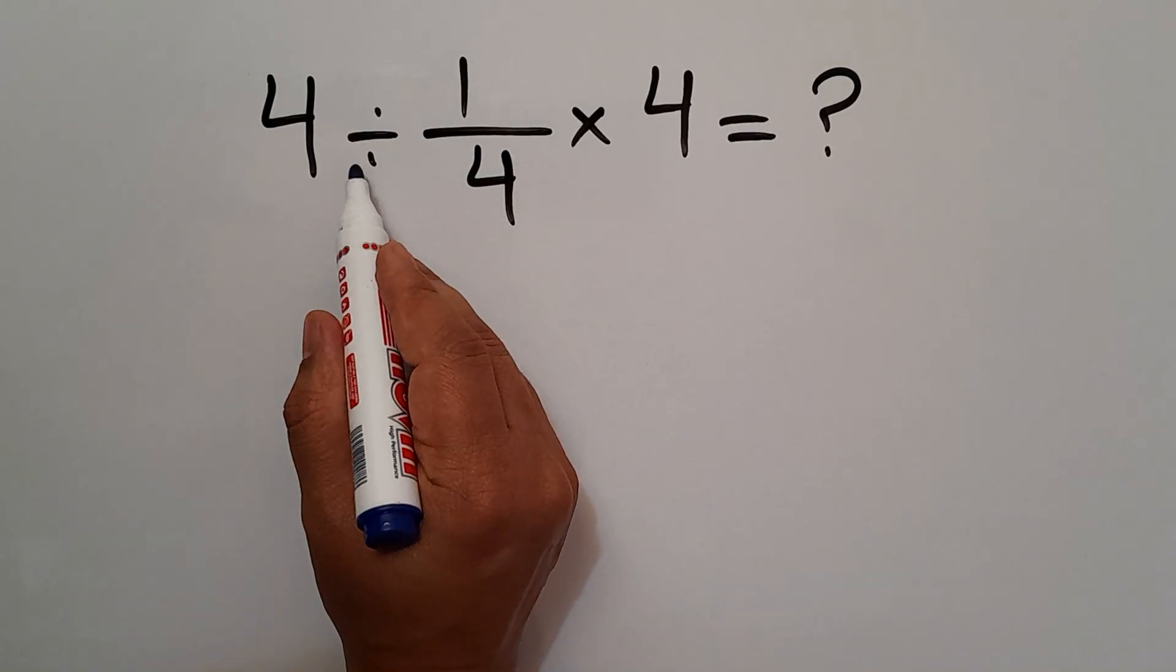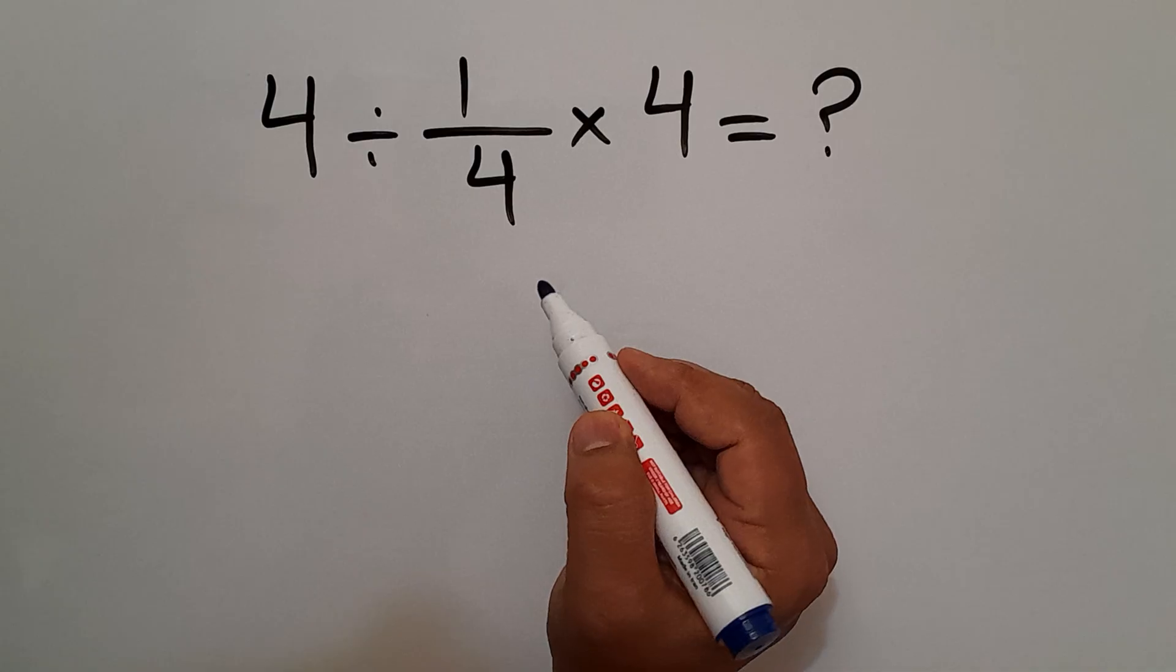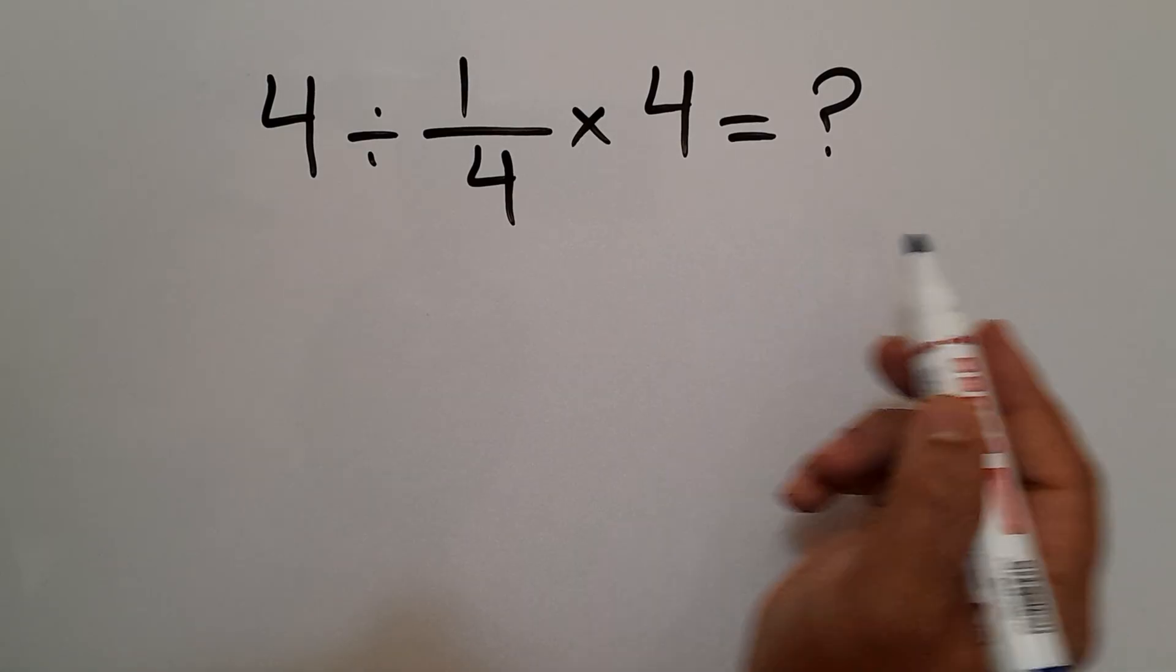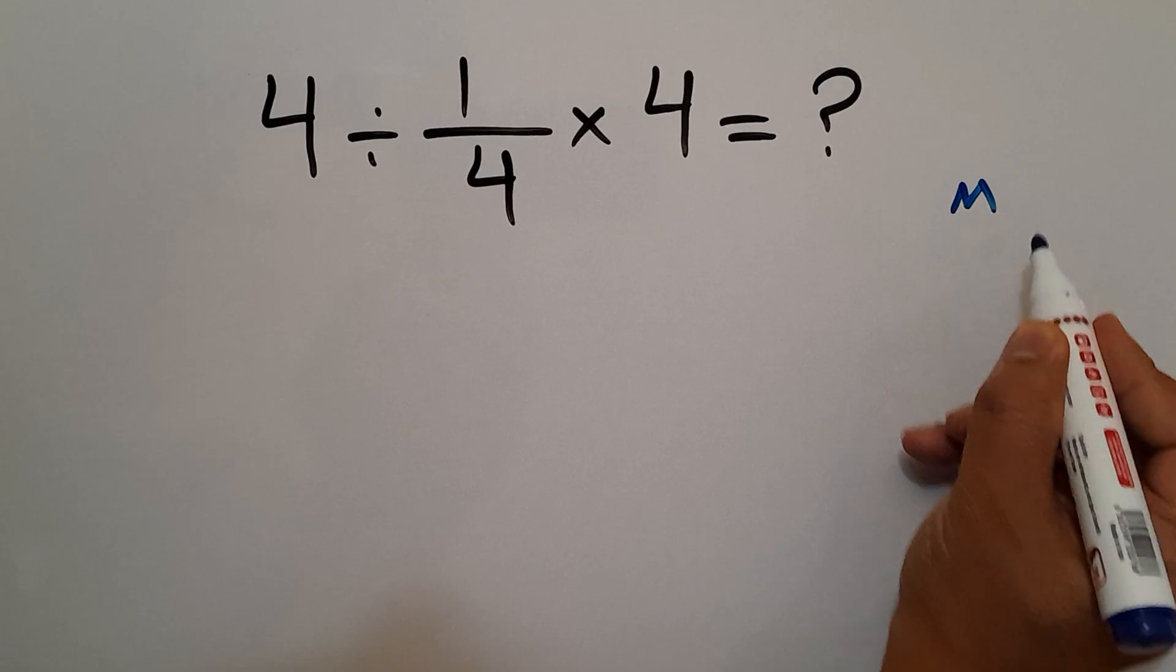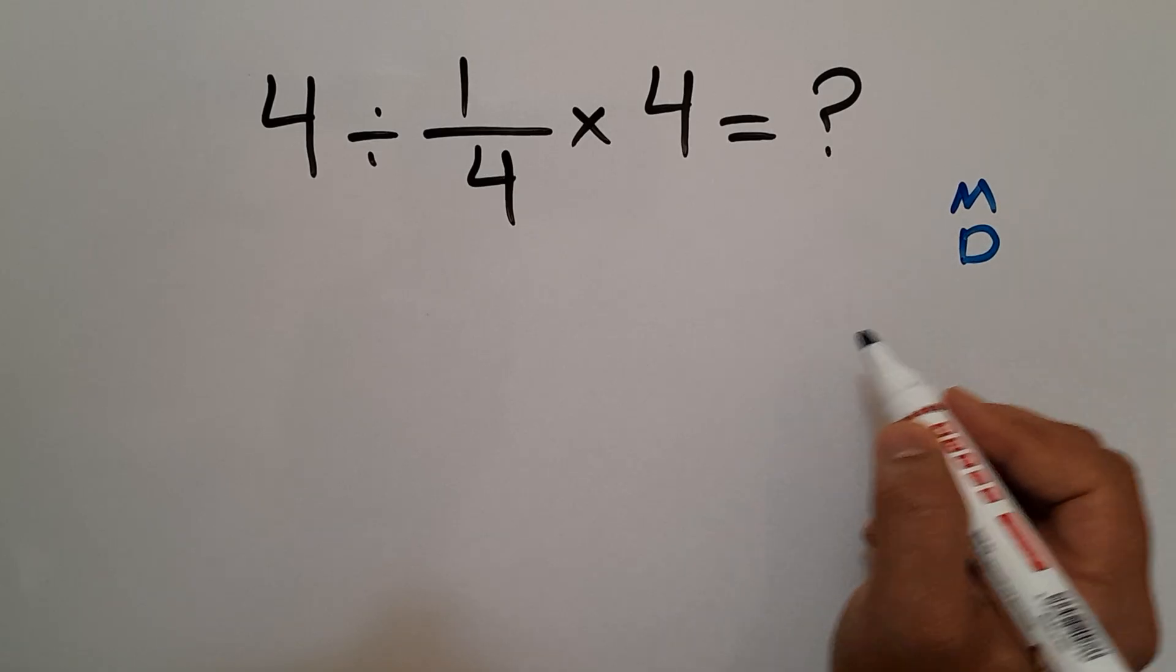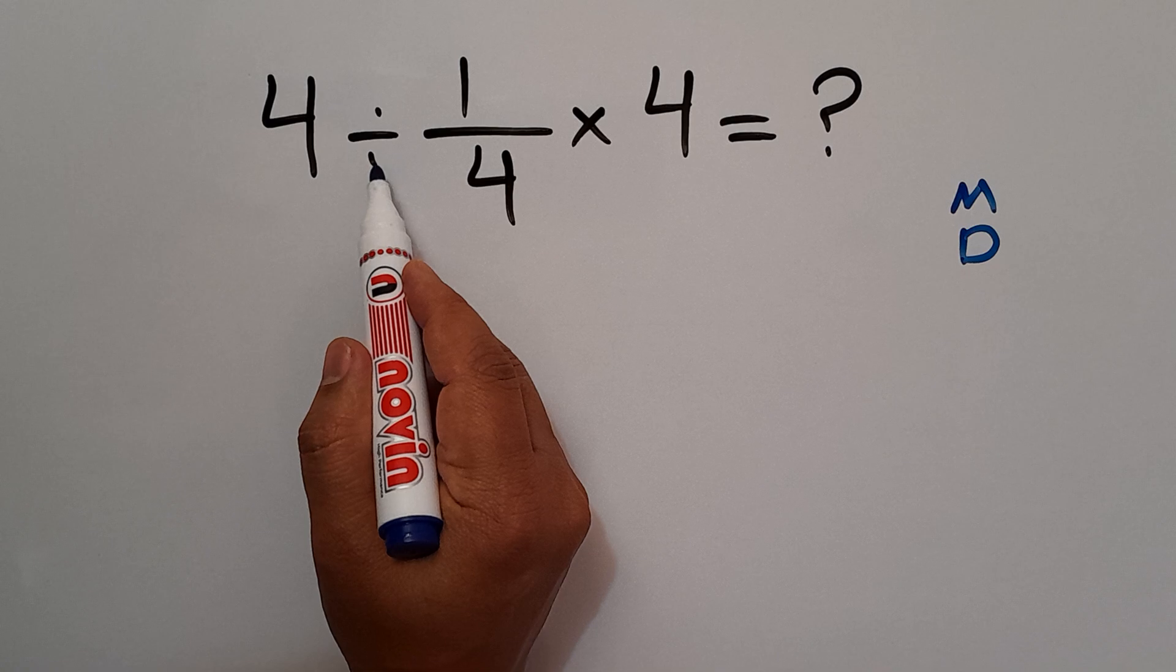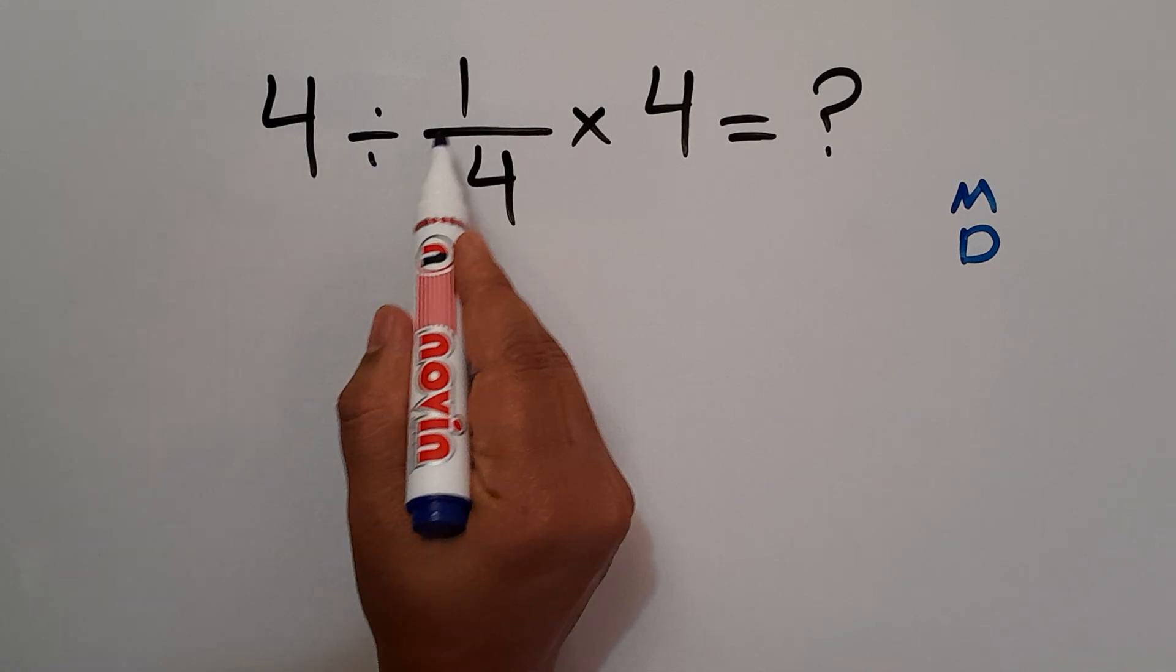In this expression we have one division and one multiplication. As we know, according to the order of operations, multiplication and division have equal priority and we have to work from left to right. So first, this division: 4 divided by 1 over 4.